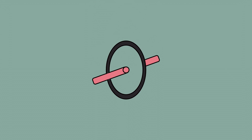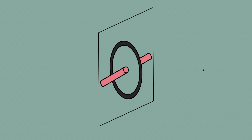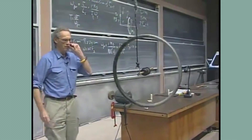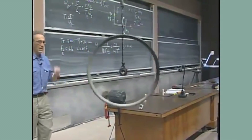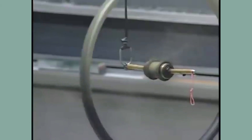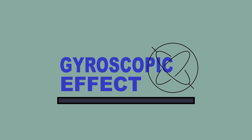Some of you might have experienced that when you apply a force on a spinning wheel to change its direction of rotation, it doesn't move in the direction that we want. Or when we connect a spinning wheel to a string like this, the wheel would start to rotate around the string. This very strange and non-intuitive behavior of rotating objects is caused by the effect called the gyroscopic effect.